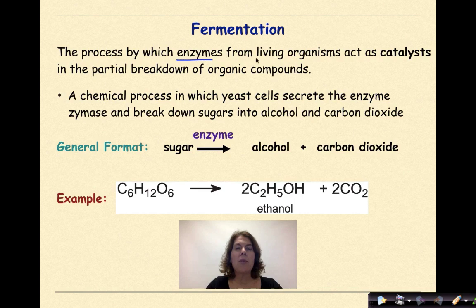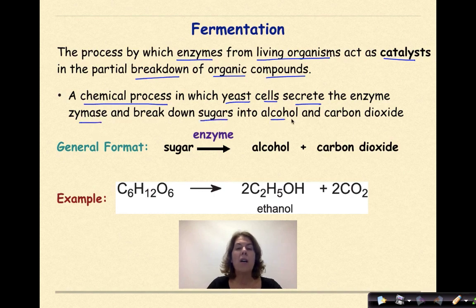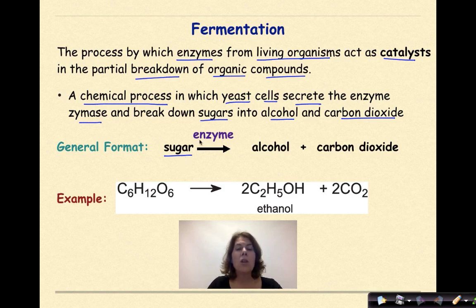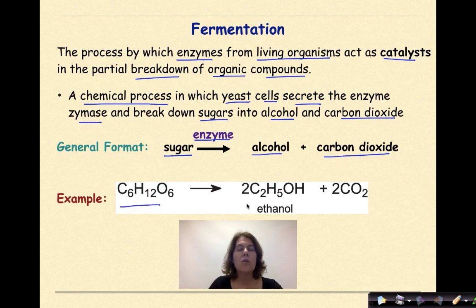Fermentation is the process by which enzymes from living organisms act as catalysts in the partial breakdown of organic compounds. Yeast cells secrete the enzyme zymase and break down sugars into alcohol and carbon dioxide. The general format involves some type of sugar — like glucose or fructose — an enzyme driving the process, and the production of alcohol and carbon dioxide as the two products. An example is glucose producing ethanol and carbon dioxide.